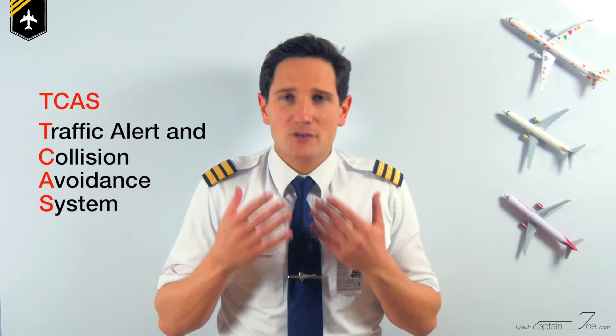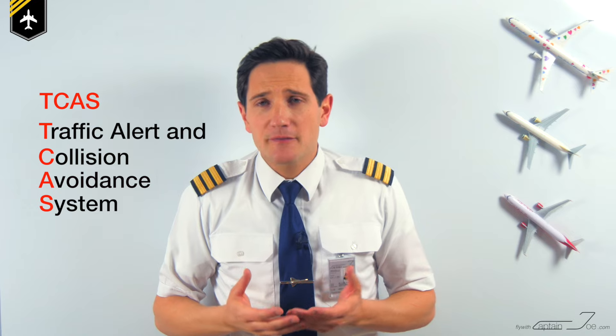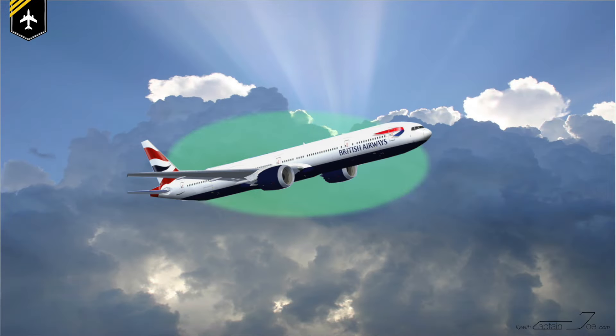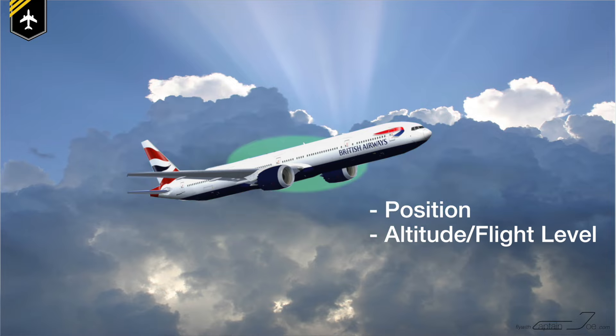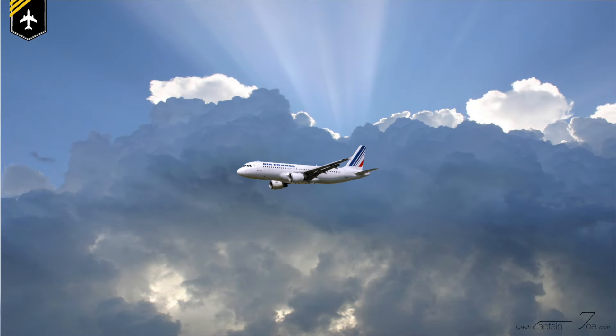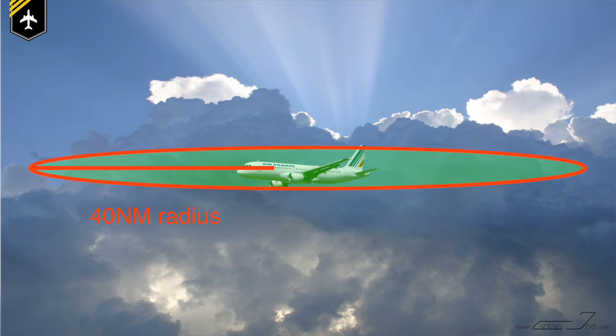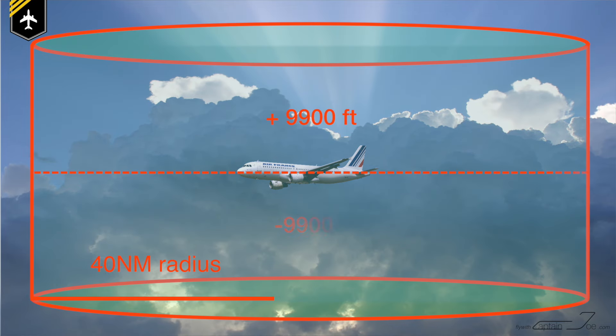Let's talk about the traffic alert part of the system first. Commercial jets have to be fitted with a Mode S transponder. The transponder sends out signals showing the aircraft's position, altitude or flight level, and current vertical speed. The TCAS scans the airspace around the aircraft for other aircraft fitted with such a transponder at a 40-mile radius horizontally and 9,900 feet upwards and downwards vertically.